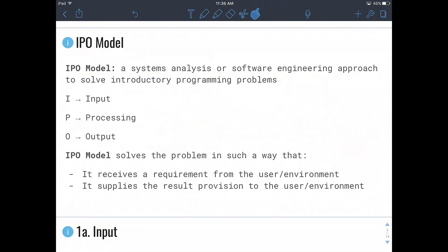The IPO model is a system analysis or software engineering approach to solve introductory programming problems. The three letters I, P and O stand for input, processing and output. An IPO model solves a problem in such a way that it receives a requirement from the user or the environment and then we process it, then we'll supply the result provision to the user or the environment.